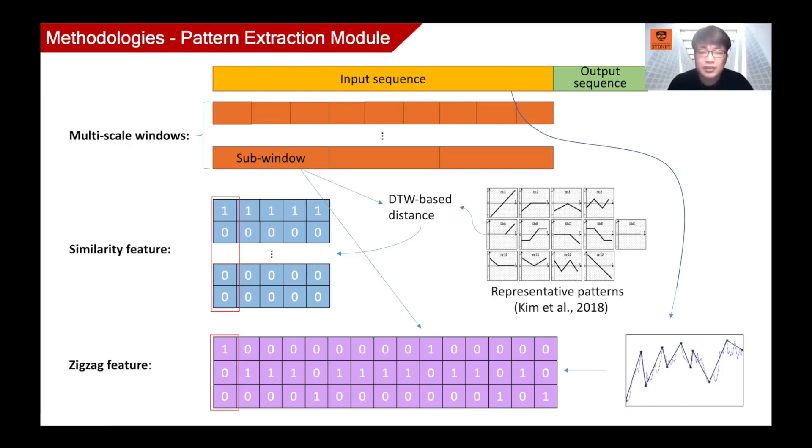The second feature is the zigzag feature. Zigzag is a technical indicator commonly used in financial analysis. It can mark out the peaks and valleys in the sequence based on differential threshold. Simply speaking, the larger the threshold, the less peaks and valleys will be chosen. We implemented zigzag indicator on the whole input sequence, then used one hot encoding to represent three conditions of peak, valley, and others of each point.